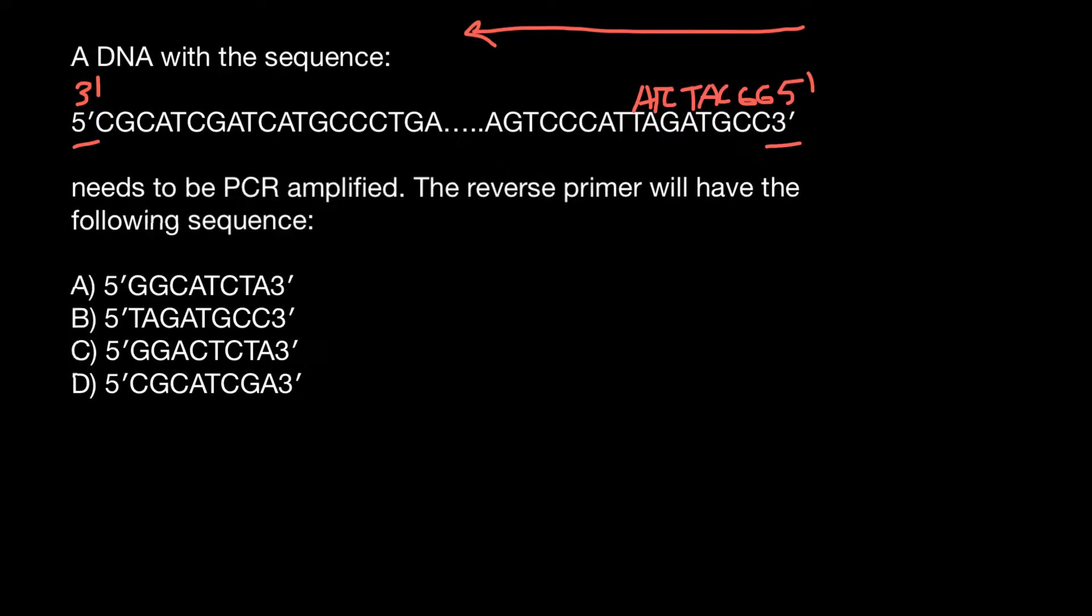For convenience, you can put 3' here. This is going to be the sequence of our primer. Now we have to choose which primer has the same sequence. Don't be confused that here all 5' ends are on the left and all 3' ends on the right, but here we have 5' ends on the right and 3' ends on the left.